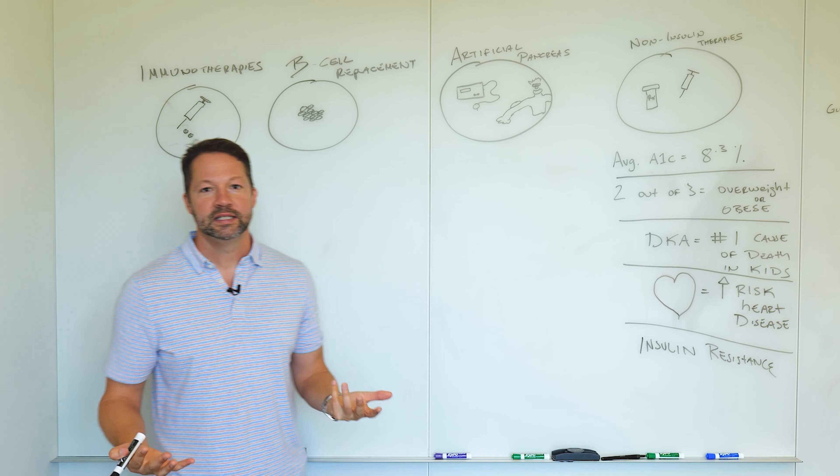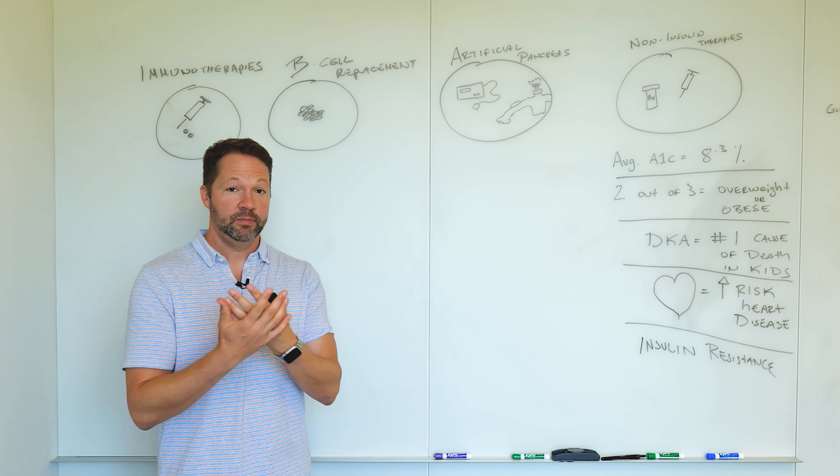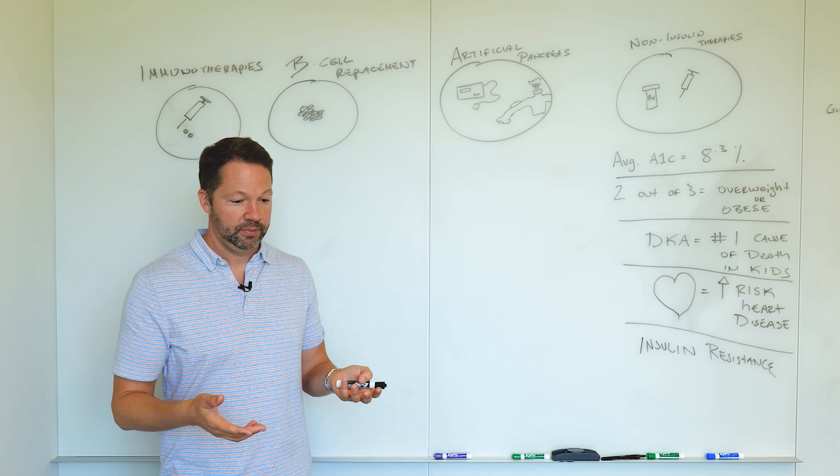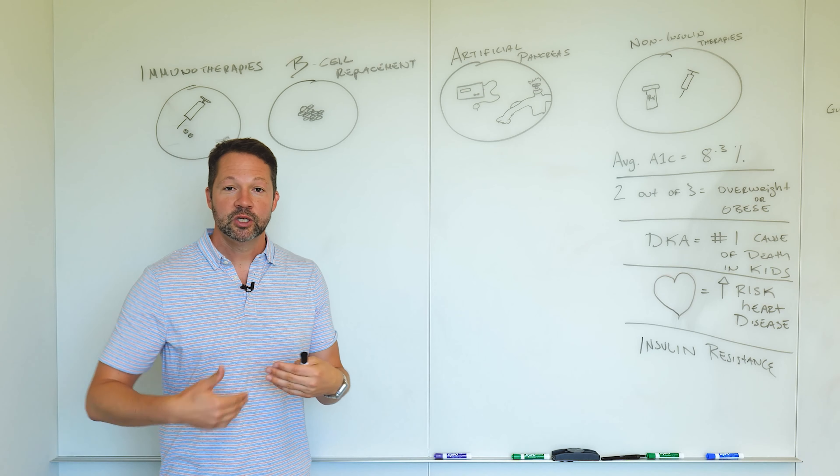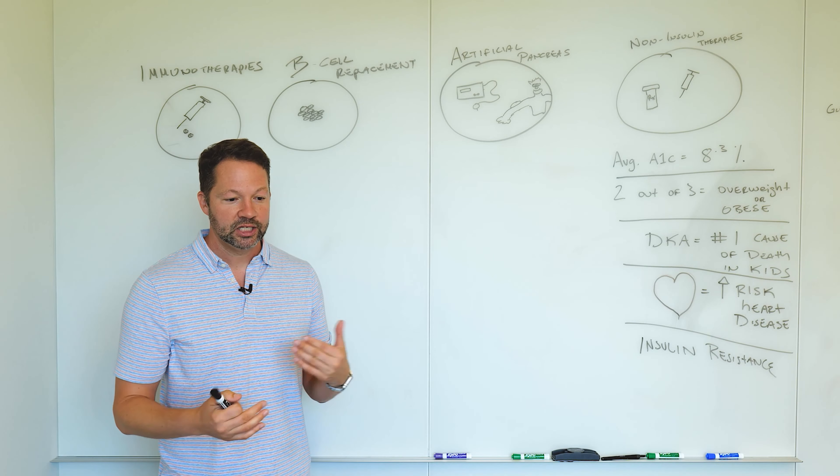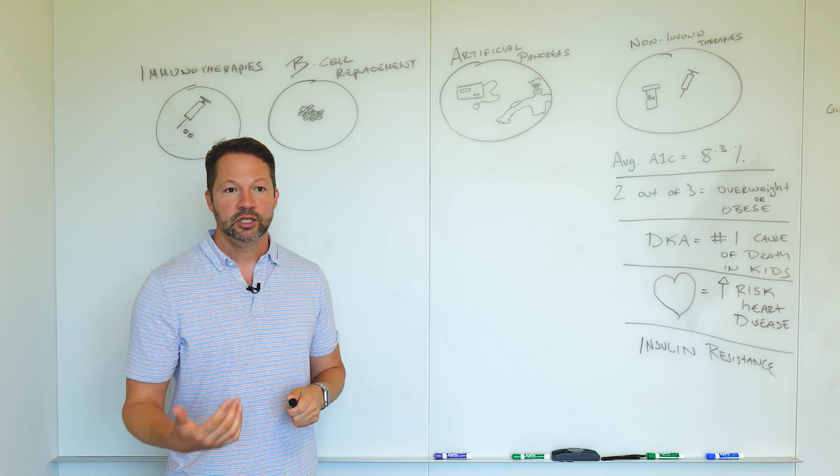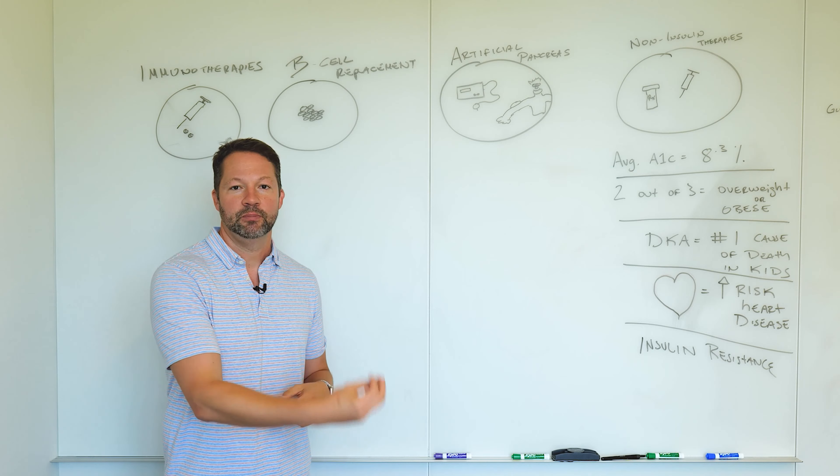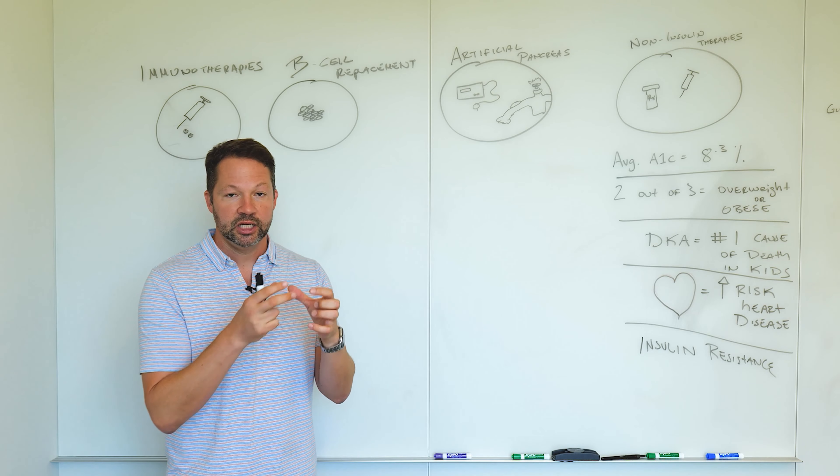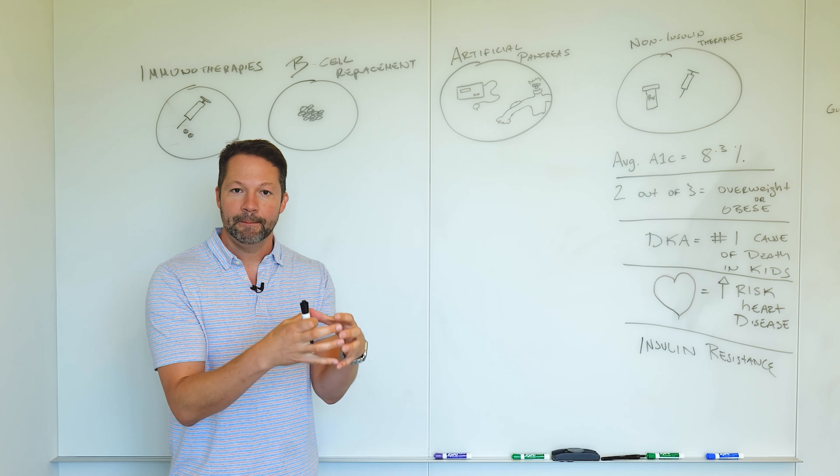The next category is what I would call beta cell or cellular replacement. So we know again, in type one diabetes our beta cells are kaput. They're simply gone after a period of time. So we need more beta cells. And there's lots of ways to do that. Actually here at UCSD, we were the first place in the world to do a stem cell beta cell replacement approach where we actually took stem cells, a company called Viacite that were able to become beta cells, package them in a little device to help protect the cells.